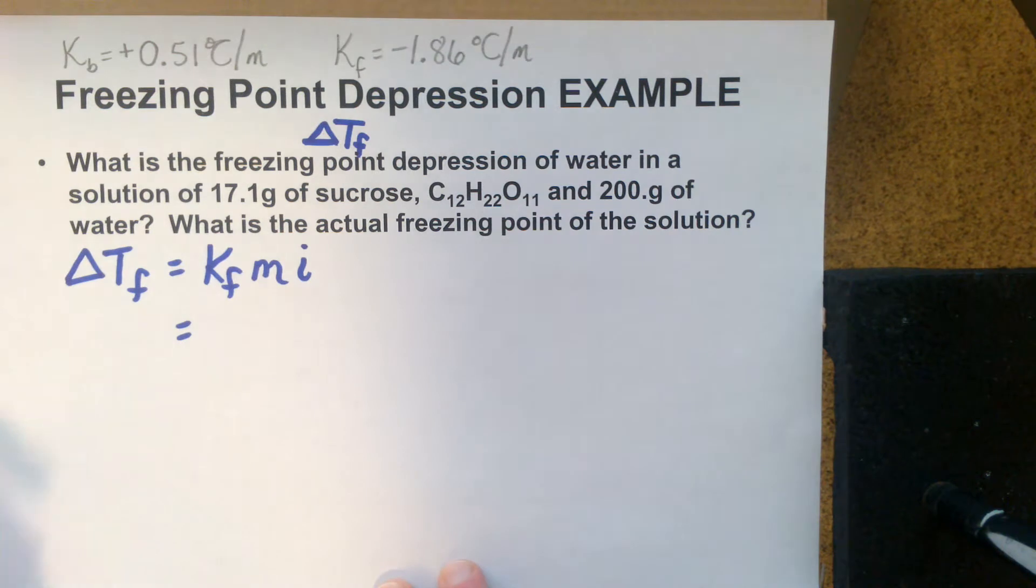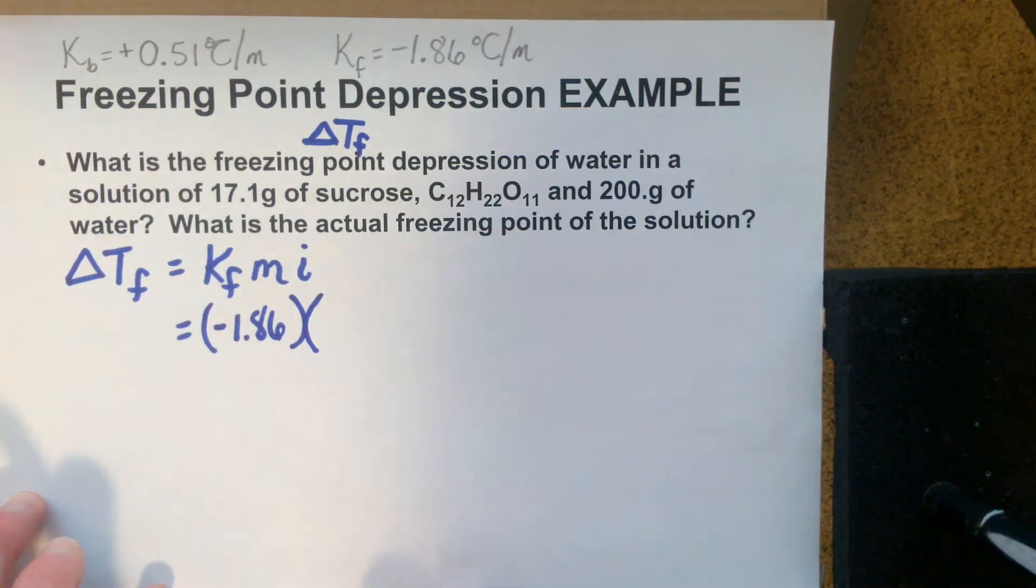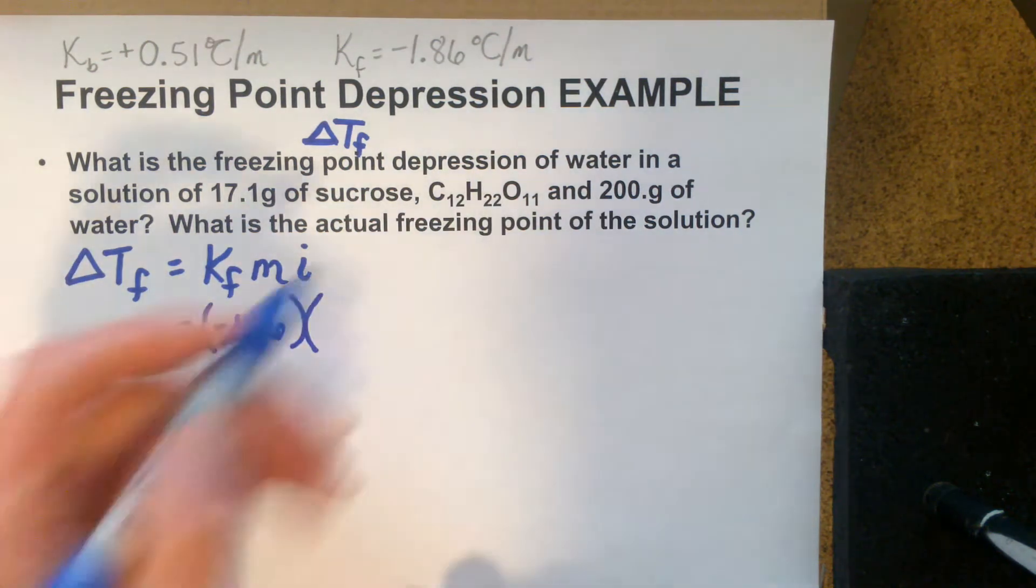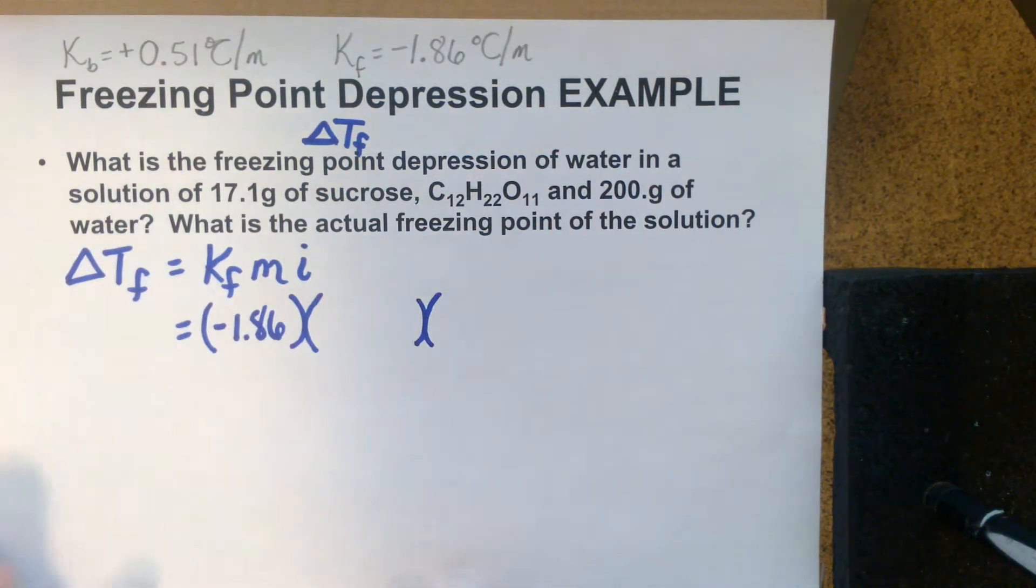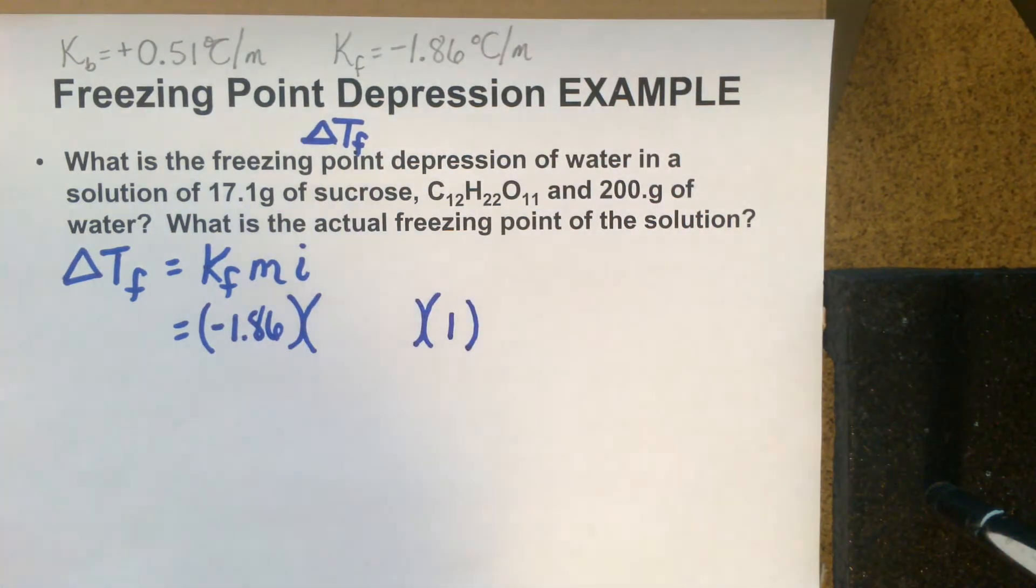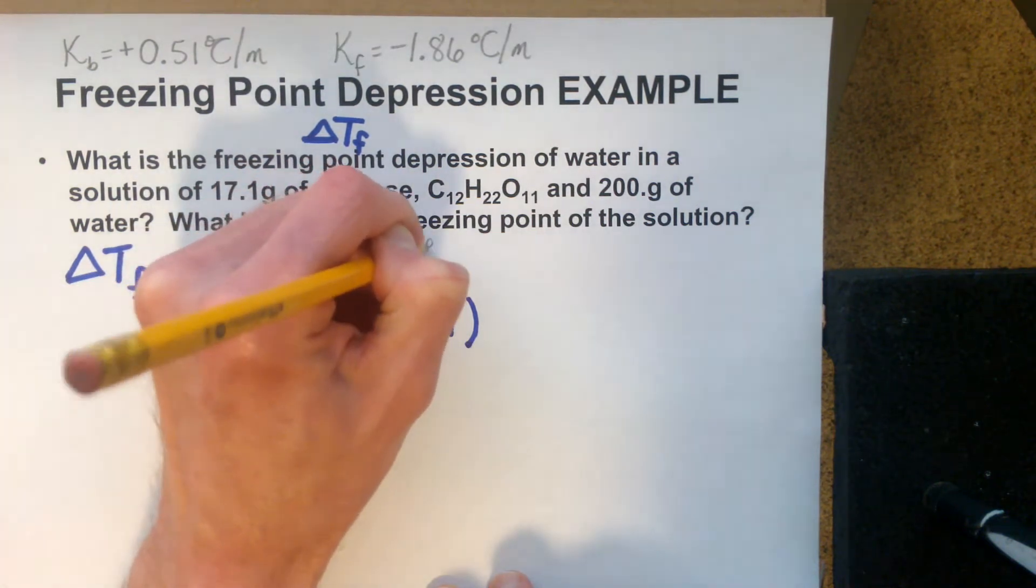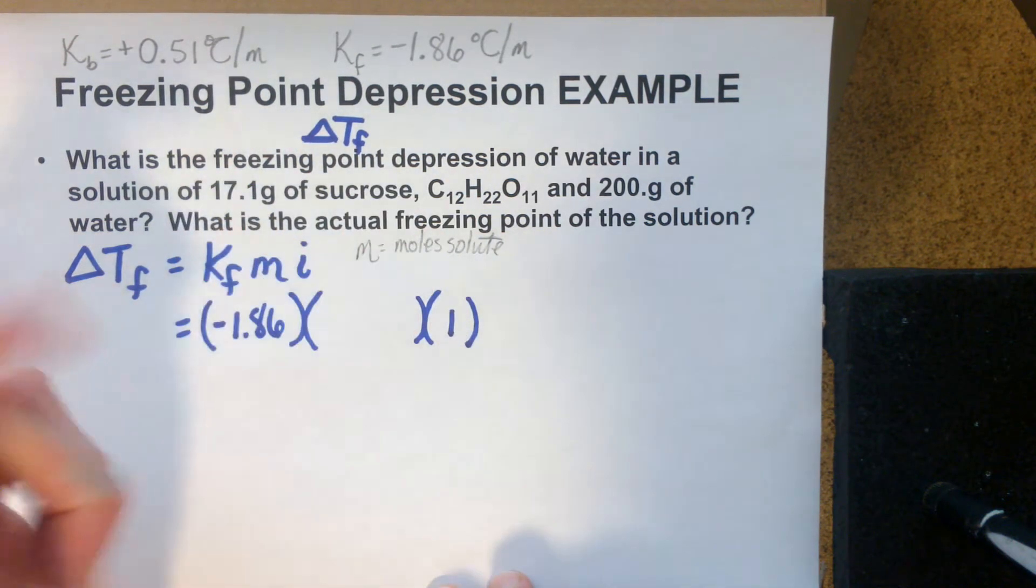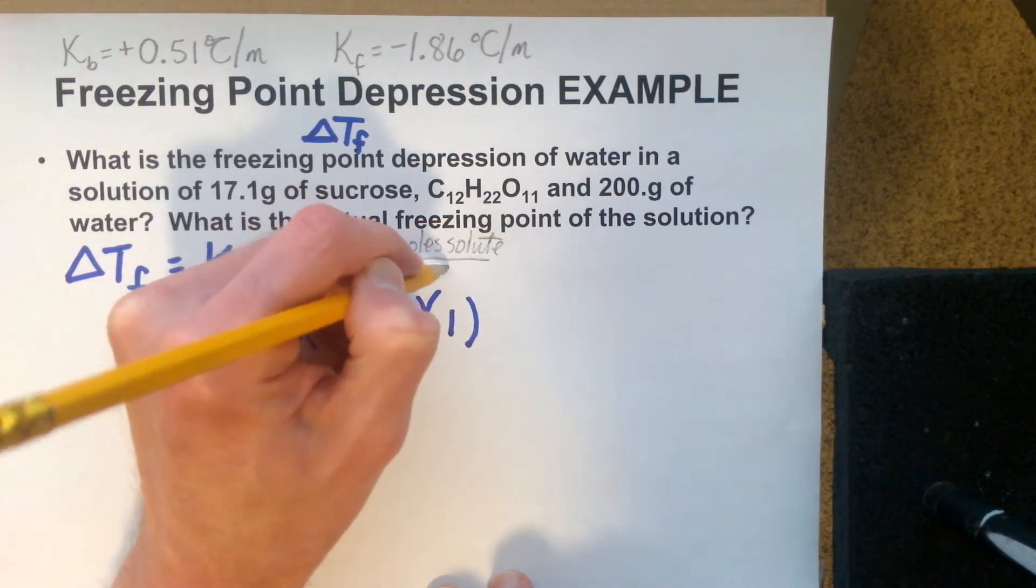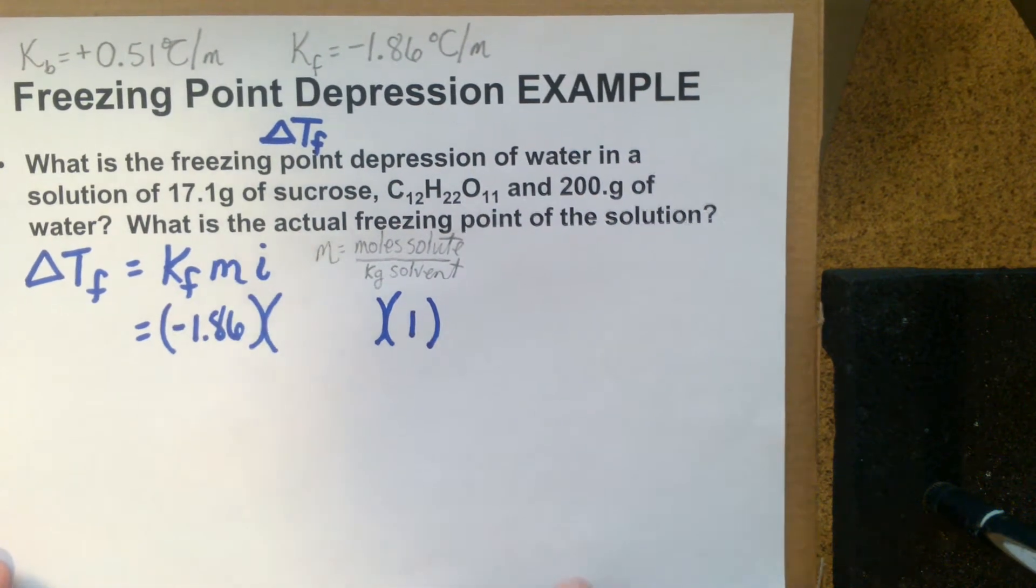Let's put in our Kf value. We just retrieved that from a data table: negative 1.86. Our molality, we do not know. They didn't give it to us. But we do have the Van't Hoff factor. Because sucrose, when we look at this sucrose, we recognize that is a molecular compound. It is not composed of ions that would split and become an electrolyte solution. So it has a Van't Hoff factor of one. Now, we need to get this molality.